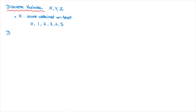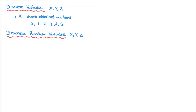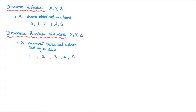A discrete random variable is also referred to using a capital letter, say capital X, Y, or Z. For discrete random variables, the value of the variable depends on probability — in other words, depends on chance. For example, if we're rolling a single dice, we could define the discrete random variable capital X as the number obtained when we roll the dice, in which case capital X could take on either of the six values 1, 2, 3, 4, 5, or 6.